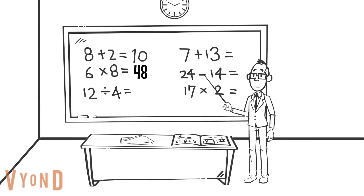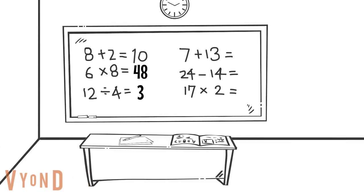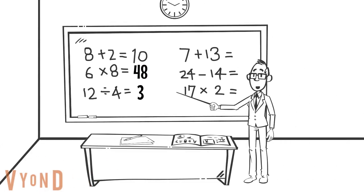What is twelve divided by four equal? It's three. Correct answer, Paul.